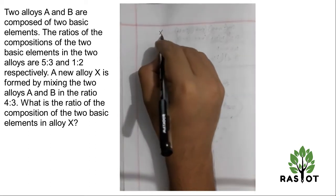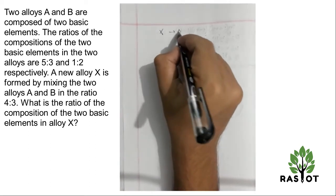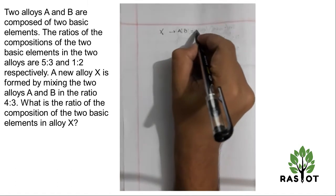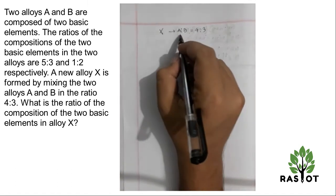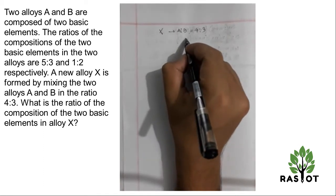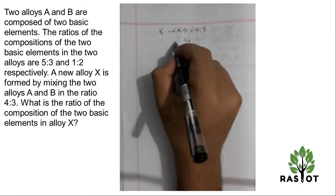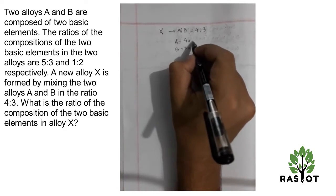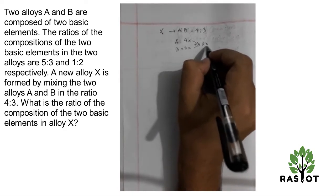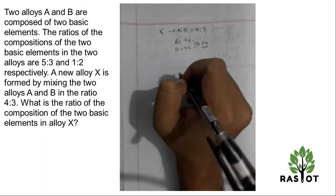The ratio is 4 is to 3, so we have a total mixture where A is 4X and B is equal to 3X. So this one is actually 7X total to make a mixture.